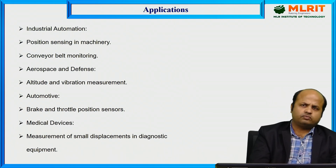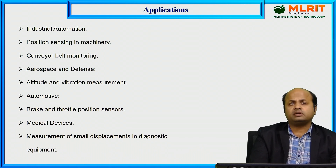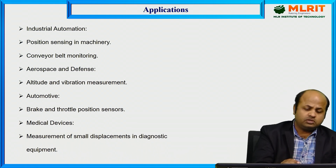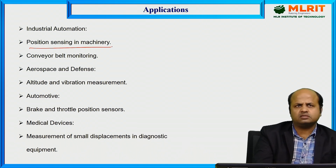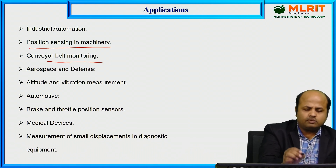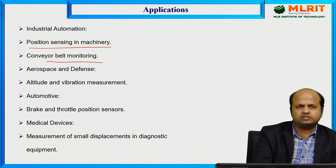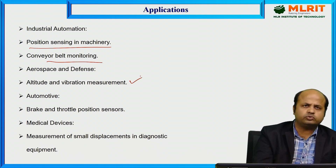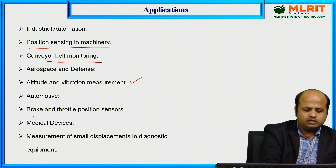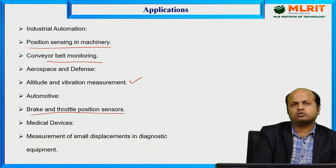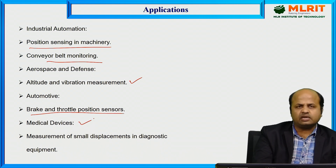Inductive transducers are very widely used for position sensing in machineries and conveyor belt monitoring. In the aerospace sector, they are used to detect altitude and for vibration measurement. In the automotive sector, they are used as brake and throttle position sensors. In medical devices, they can be used for small displacement measurement in diagnostic equipment. Thank you.